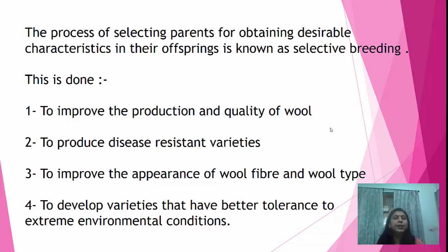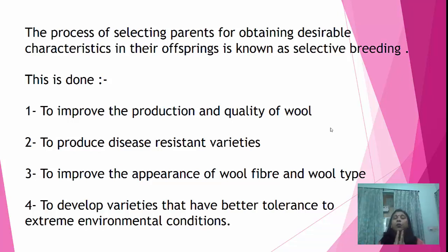Why is selective breeding done? Number one: to improve the production and quality of wool. Second: to produce disease resistant varieties — meaning they are healthy ones which can resist the occurrence of diseases.